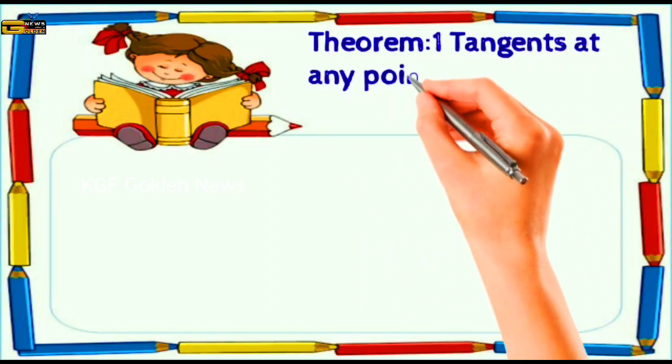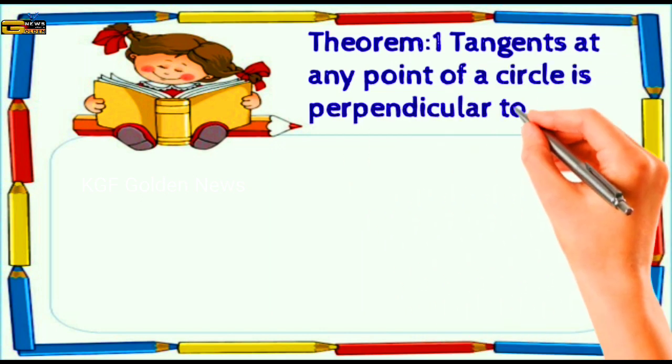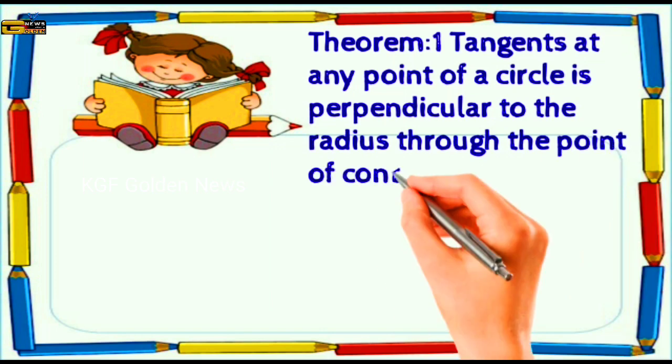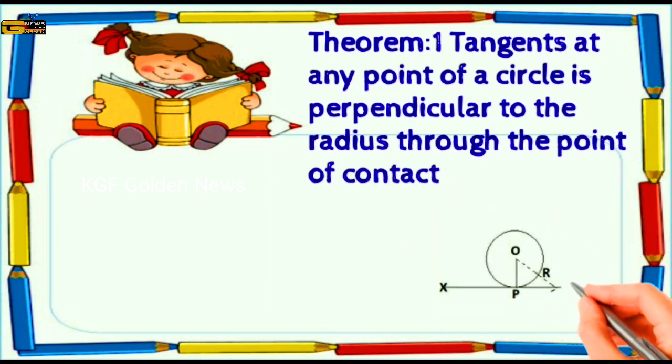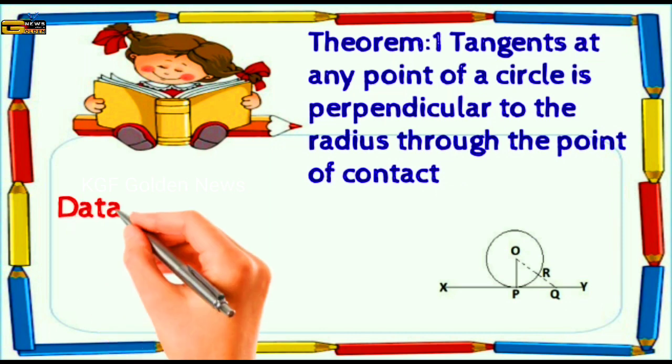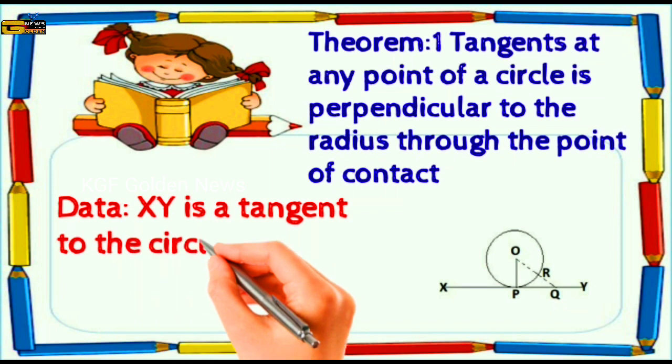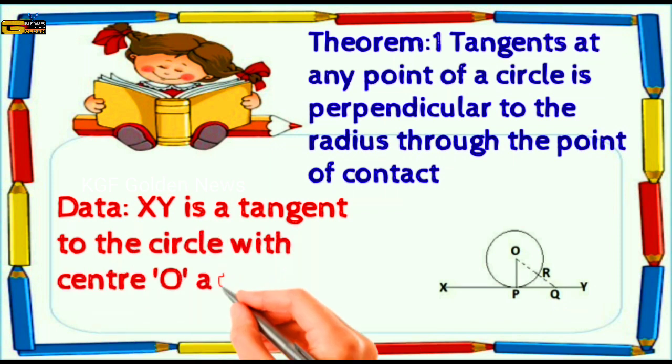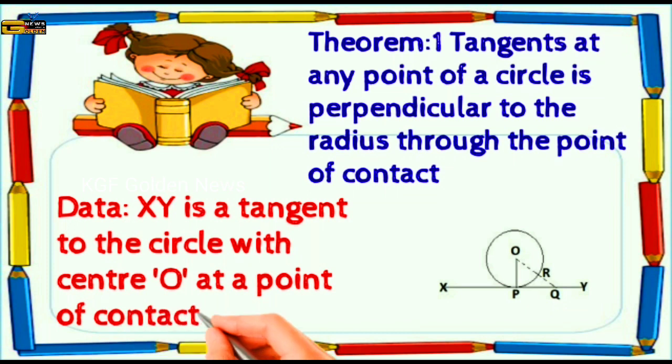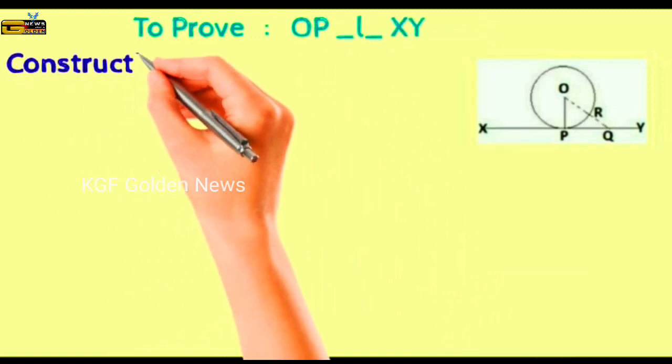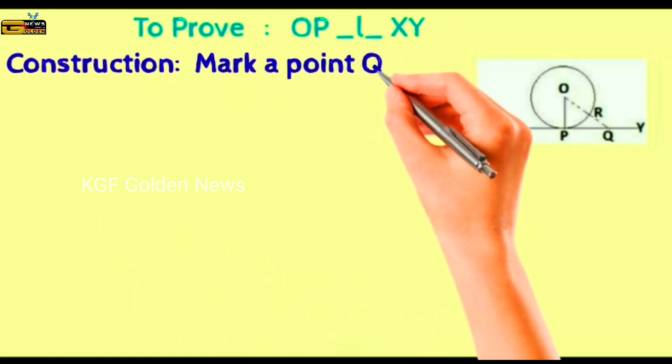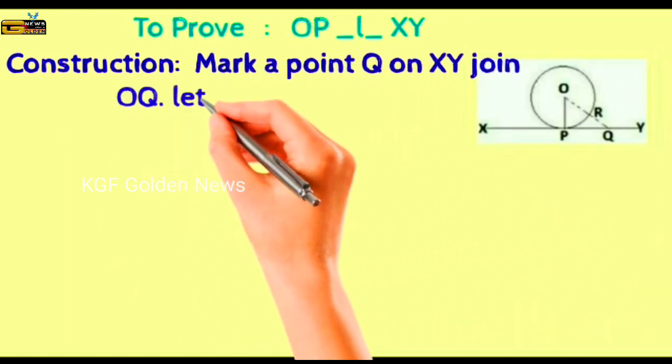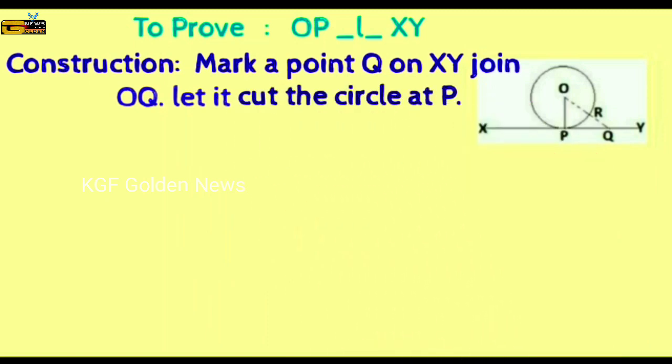Theorem: Tangent at any point of a circle is perpendicular to the radius through the point of contact. Data: XY is a tangent to the circle with the center O at a point of contact P. Let's prove. To prove OP is perpendicular to XY, construction is done. By marking a point Q on XY, join OQ. Let it cut the circle at P.